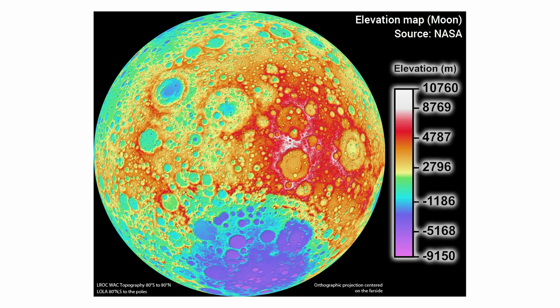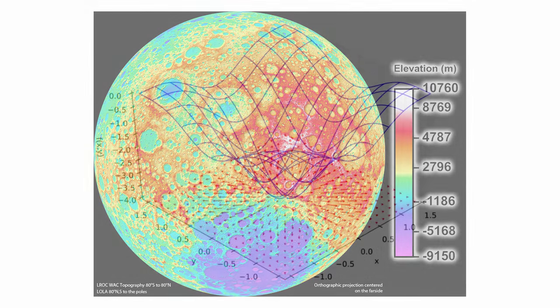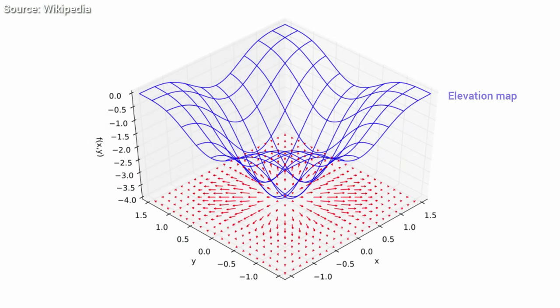The gradient is a bunch of arrows that always point in the direction of the largest increase on the map. Here, with blue, you can see the elevation map with the mountains and below it, with red, the gradient of this elevation map. This is where you should be going if you are looking for a challenge.